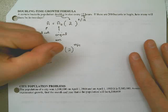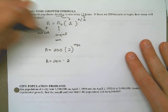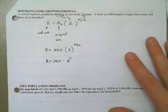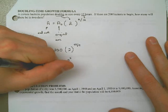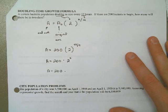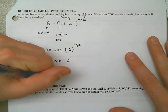A is equal to 200 times 2 to the, and then 48 divided by 12 is 4. The amount of bacteria is equal to 200 times 2 to the 4th power. Well, 2 to the 4th power turns out to be 16. And 200 times 16 is 3,200 bacteria.